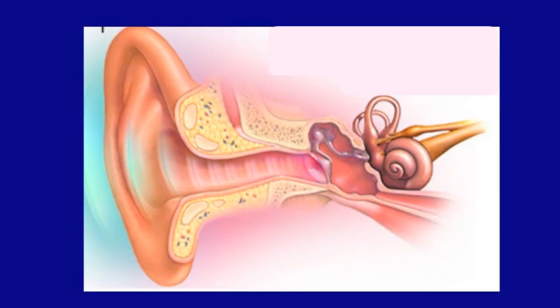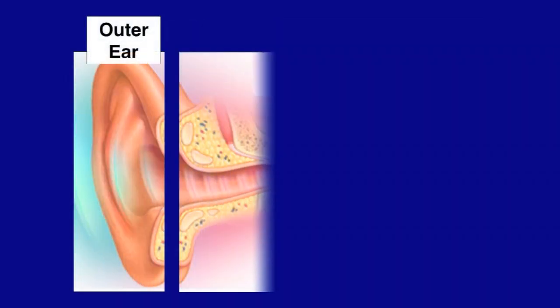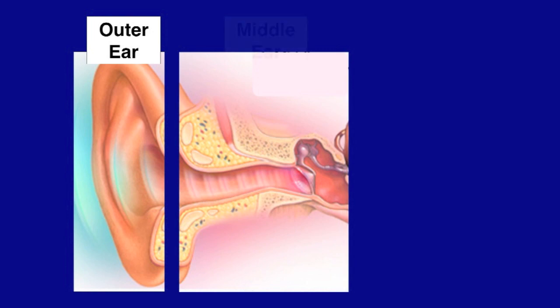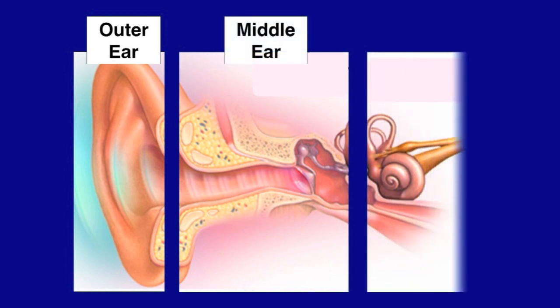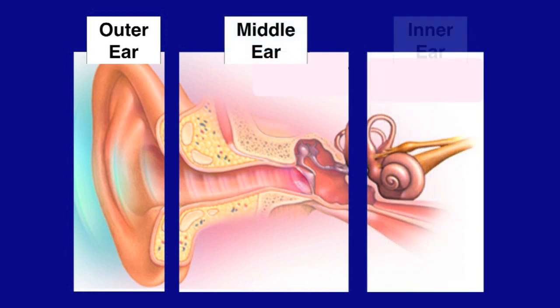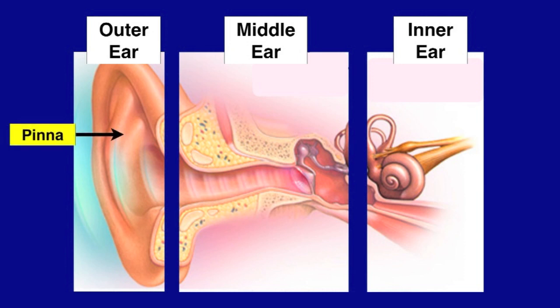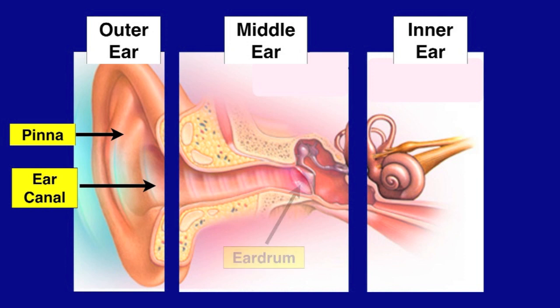The ear has three main parts: the outer ear, the middle ear, and the inner ear. The outer ear is made up of the pinna and the ear canal. The middle ear is made up of the eardrum.